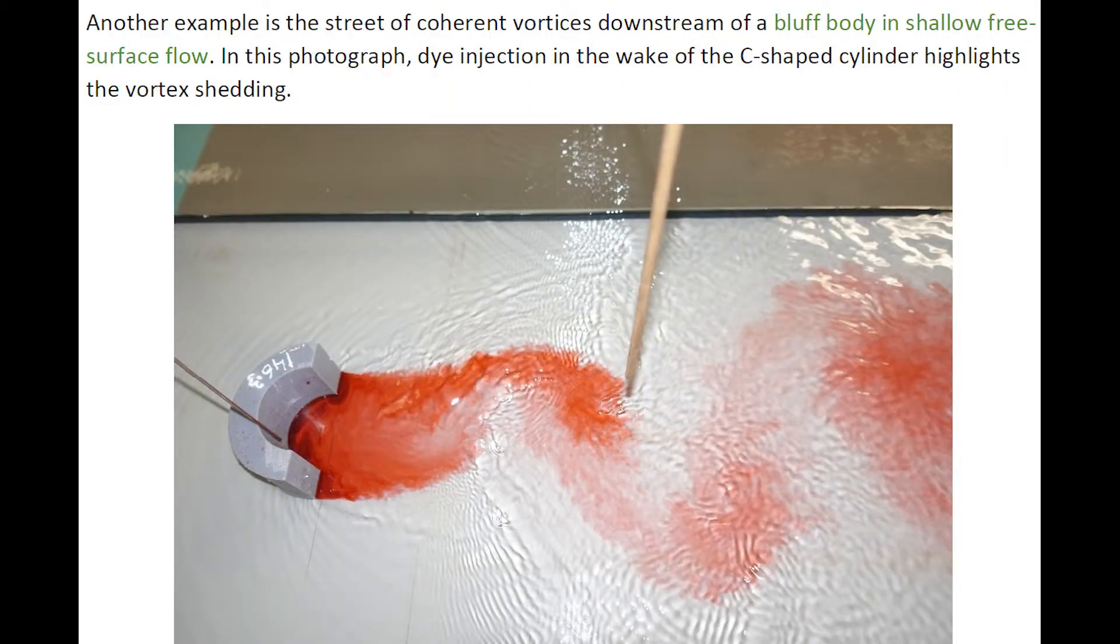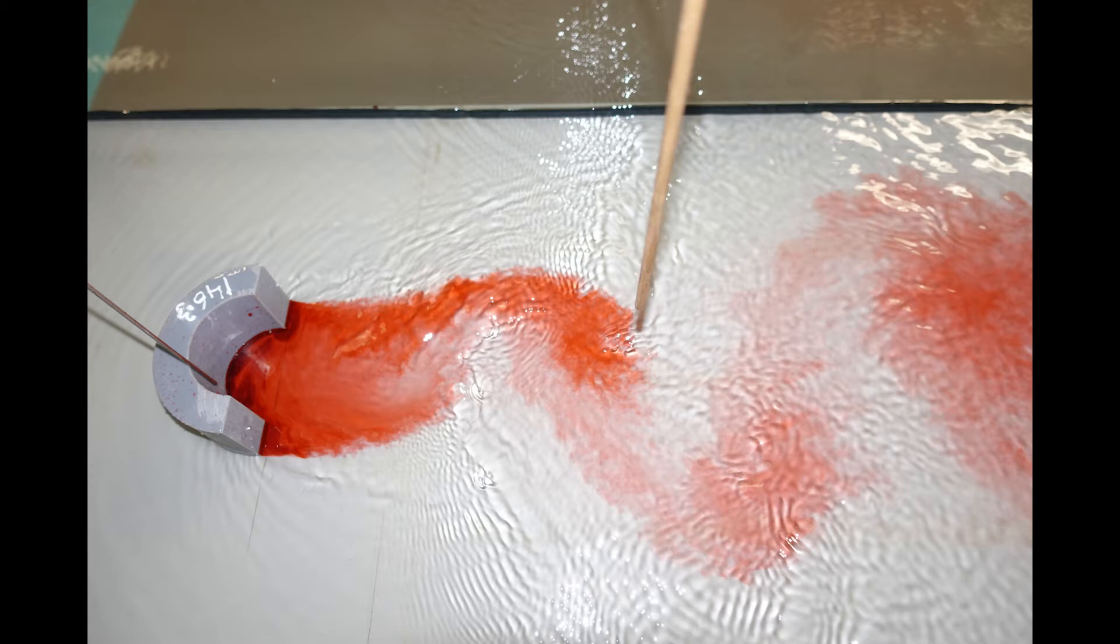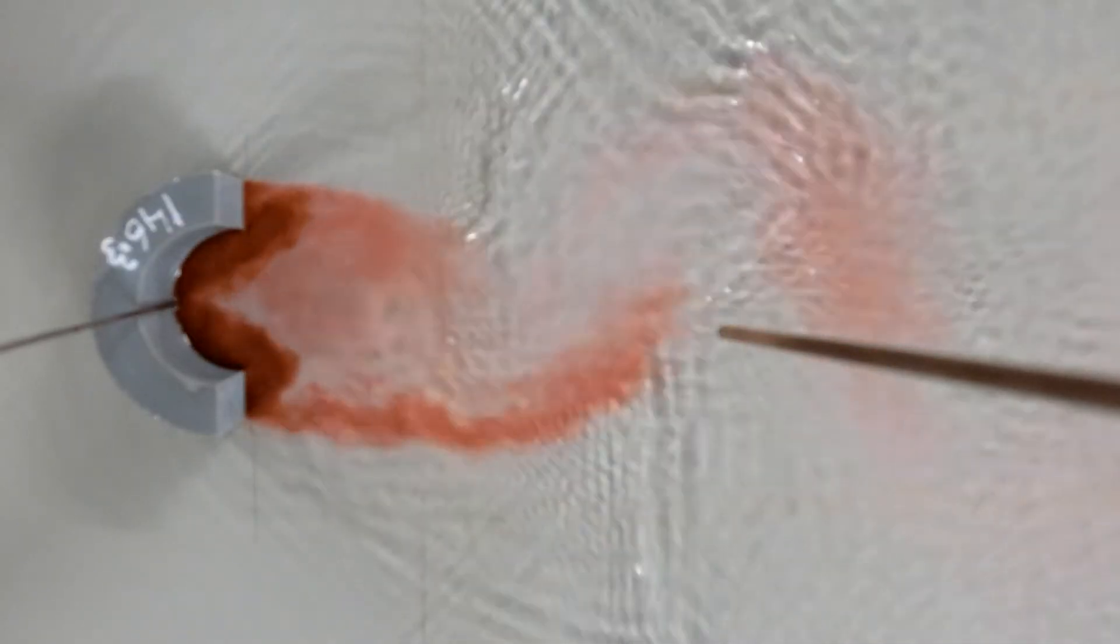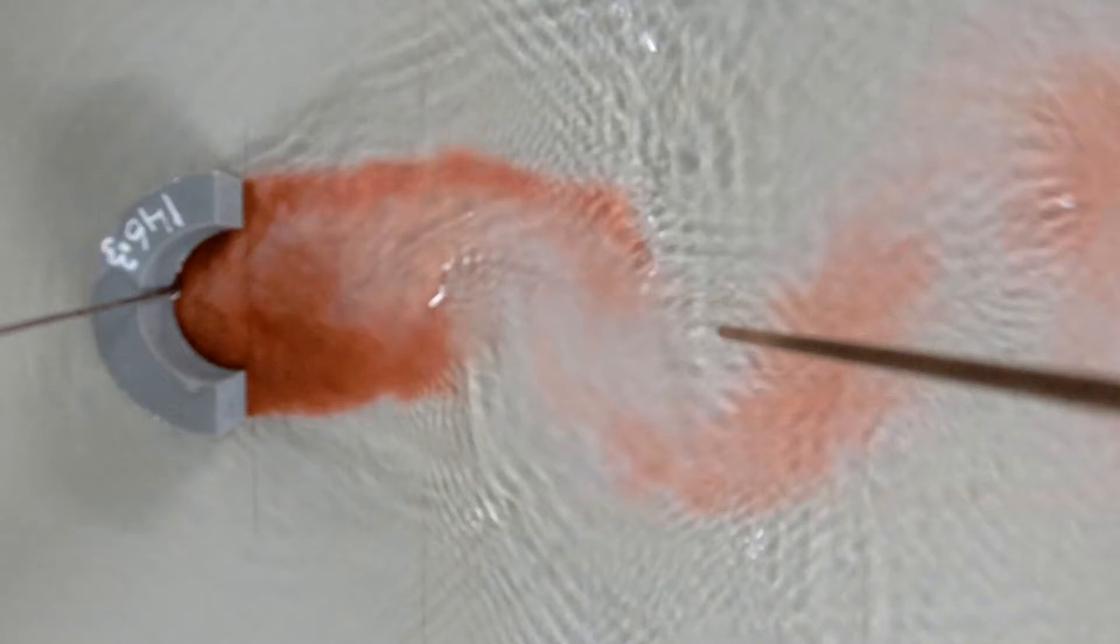Another example is the street of von Kármán vortices downstream of a bluff body in shallow free surface flow. Here we see dye injection in the wake of a C-shaped cylinder highlighting the vortex pattern.